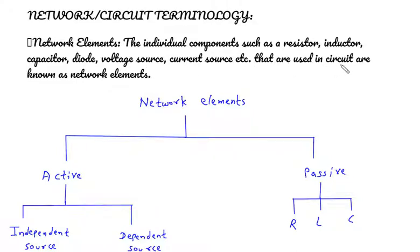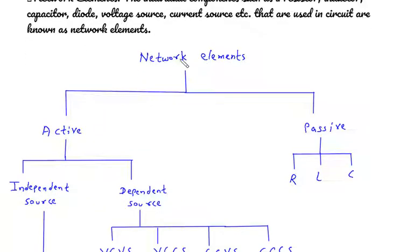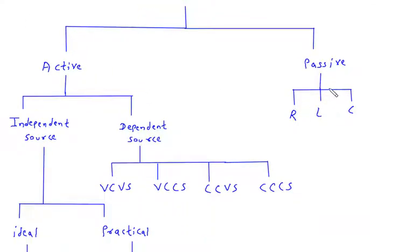that are used in circuit are known as network elements. Network elements are classified as active and passive. Passive elements are further classified as resistor, inductor, and capacitor.